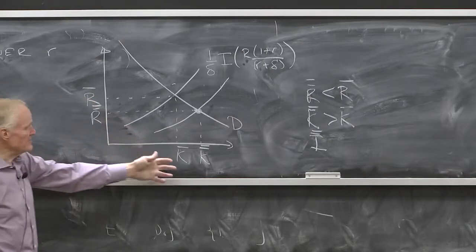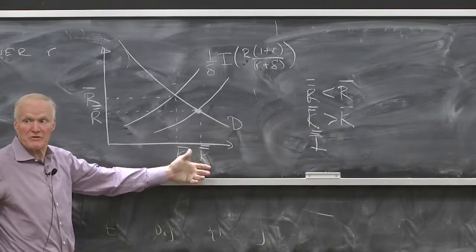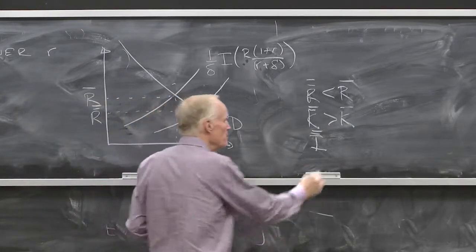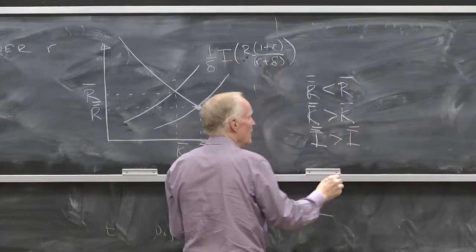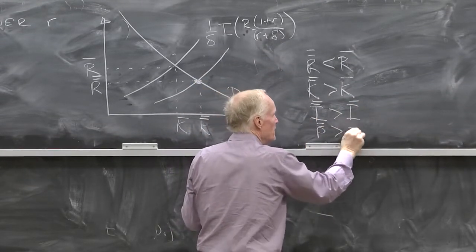if I'm going to sustain a higher capital stock, I've got to have higher investment. They're proportional in equilibrium. It has to be greater than I bar. And P double bar, therefore, has to be greater than P bar.